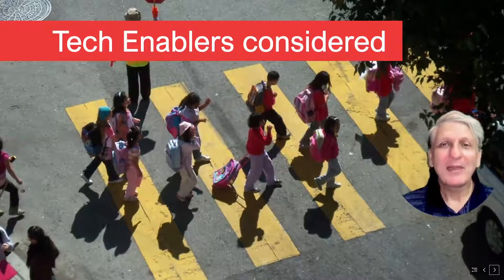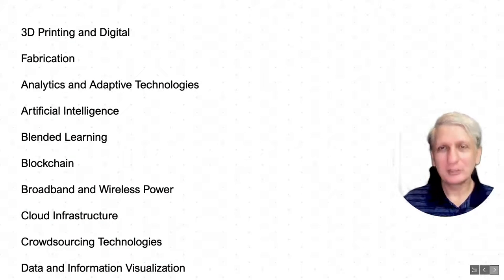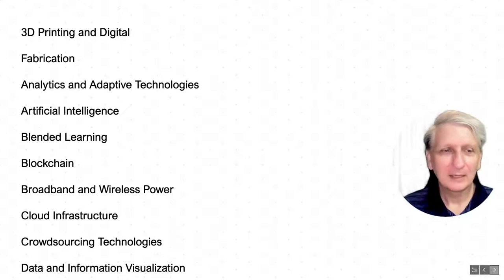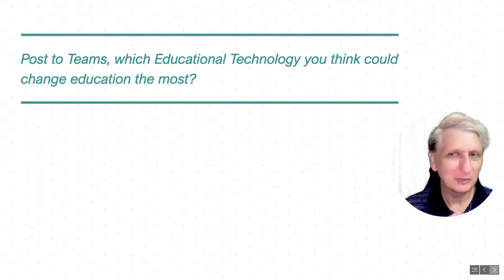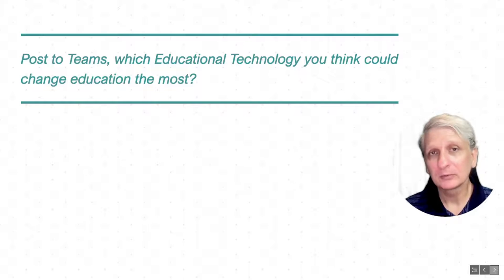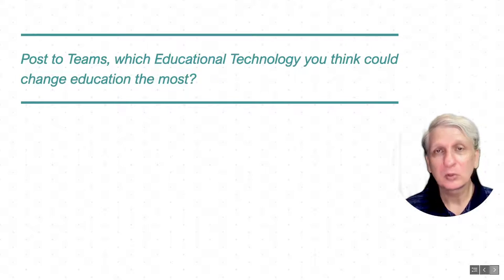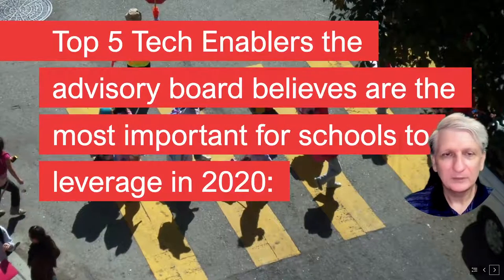Then there was a range of what are called tech enablers — the technologies that help things happen. Again, lots of different technologies were considered: 3D printing, artificial intelligence, blended learning, crowdsourcing, portfolios — over 50 possibilities. What do you think are going to be the most significant technologies that will change education the most in the next five years? Think about all the different technologies discussed during this course and what you've come across yourselves, and consider which will have the most significant impact.